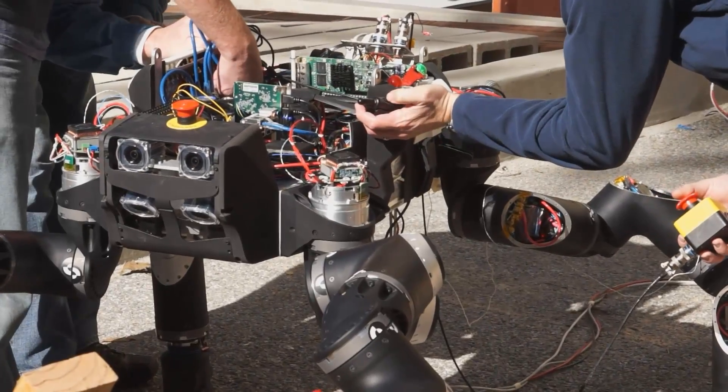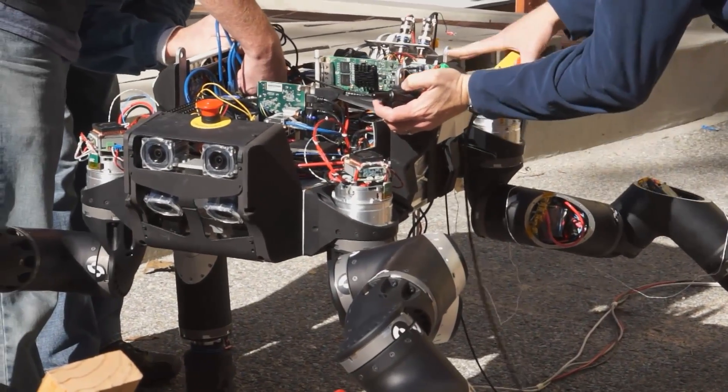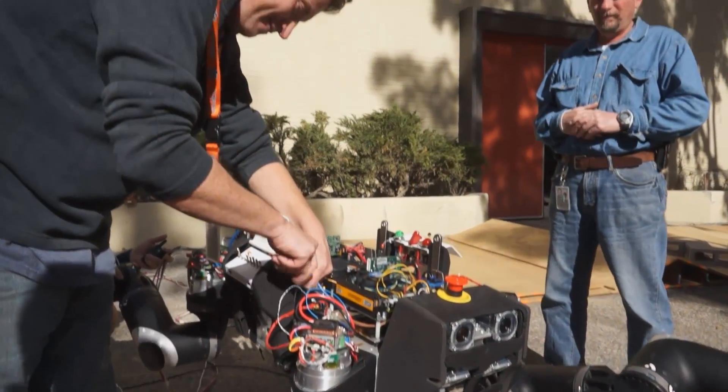Our design will win the robotics challenge because we're practical. We know our limits. We're going after what we can do. What JPL has built is a robot that can interact in a human world but is not constrained by human design.